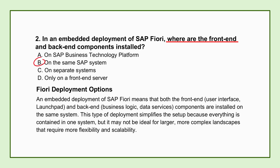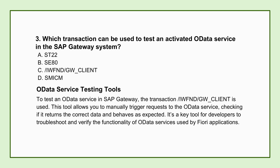So we've navigated using target mapping and know where the app might live. How do we check if the app's OData service is actually working? Question: which transaction can be used to test an activated OData service in the SAP Gateway system? Options: A, ST22; B, SE80; C, IWFND/GW_CLIENT; D, SICM. ST22 is for dumps, SE80 is the workbench, SICM is the ICM Monitor — so based on the gateway focus, the answer is C, IWFND/GW_CLIENT.